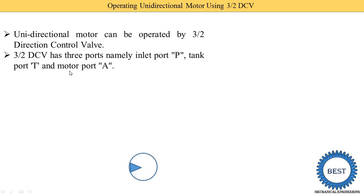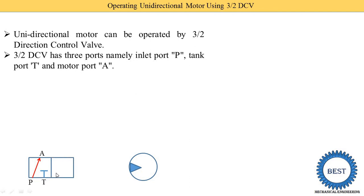If we use a cylinder, then we call it cylinder port A. A fourth port is motor port B — or cylinder port B in the cylinder case. Since we need two positions, we draw two squares. In the first square, oil is supplied from port P to port A, and the T port is closed — this symbol indicates the closed position. In the second position, oil flows from port A to port T, and the P port is closed.